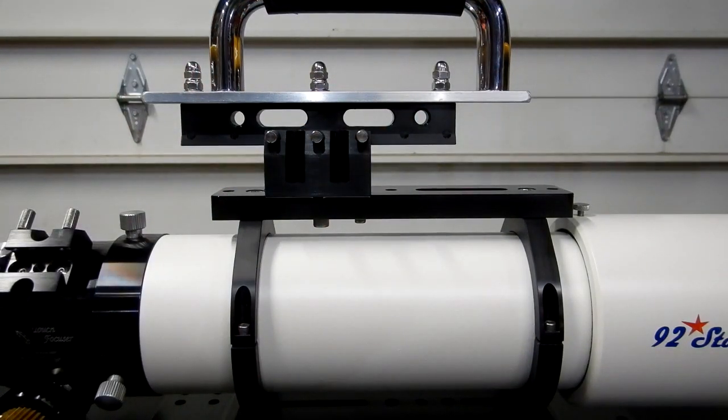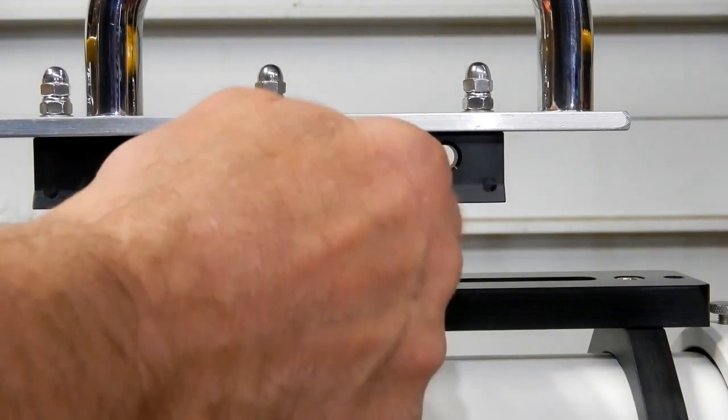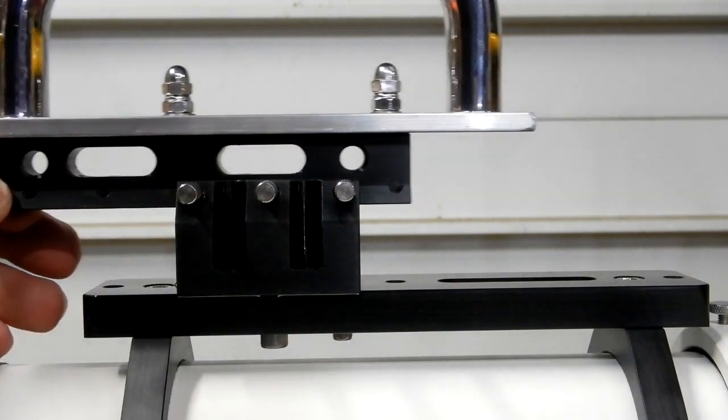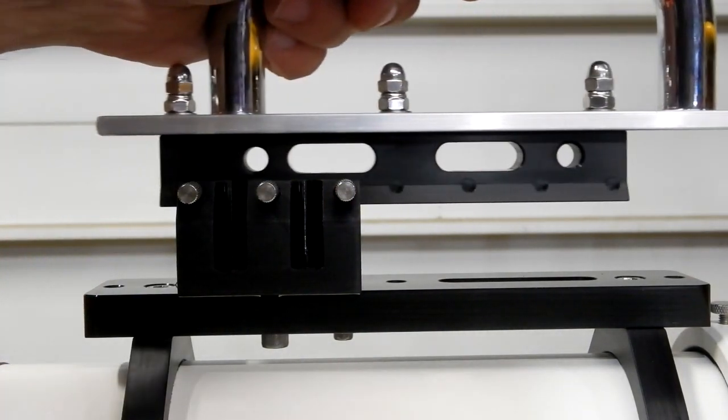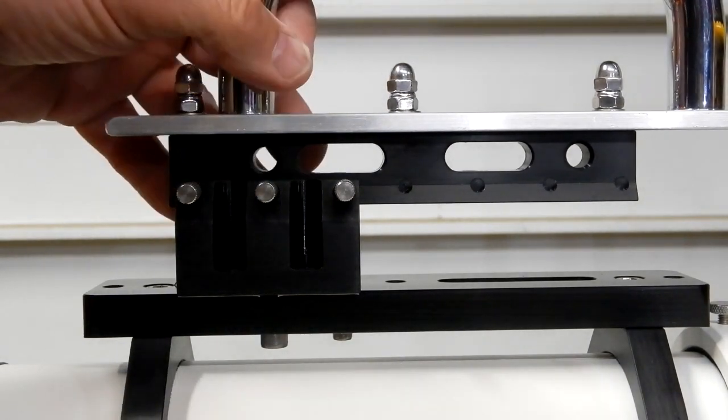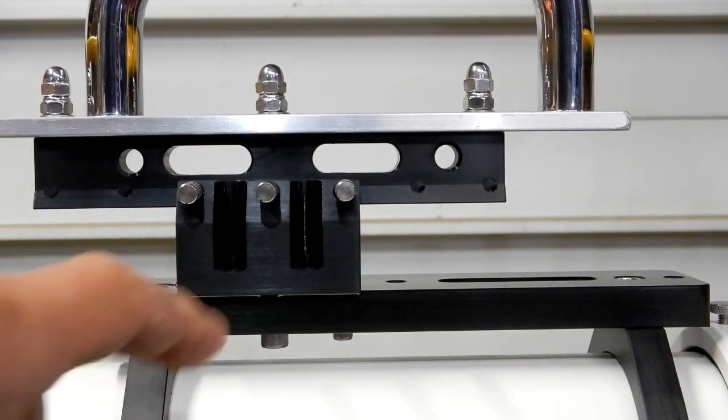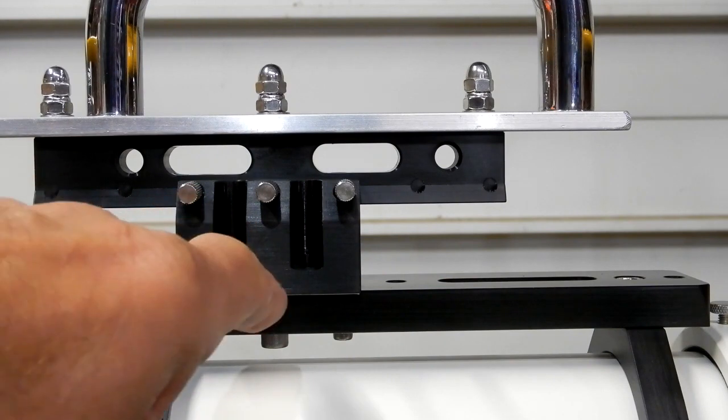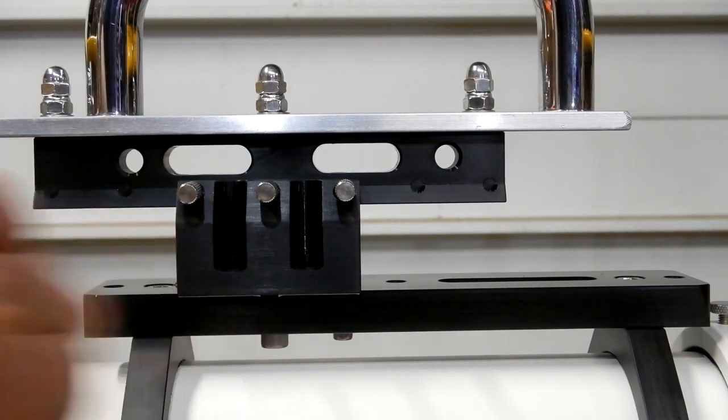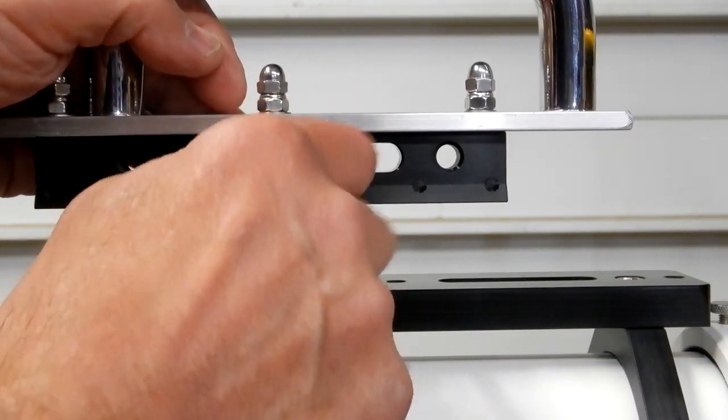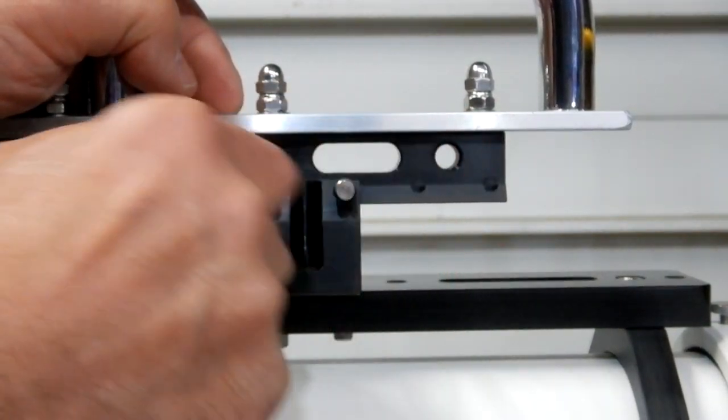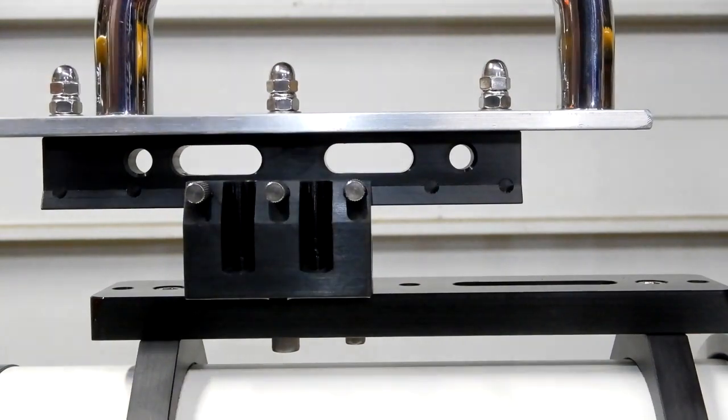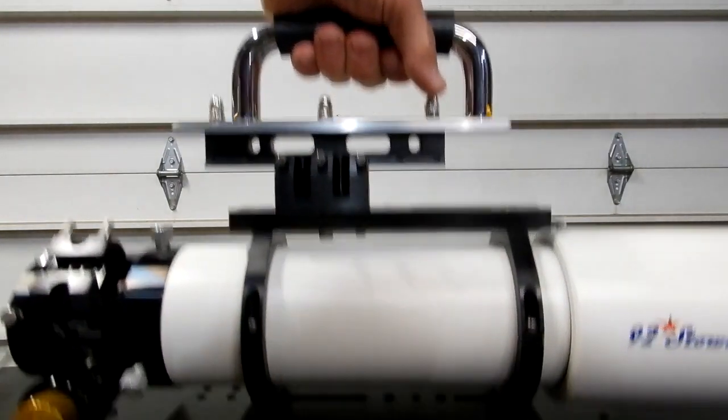The beauty of this is that since you have a multitude of positions you can slide this wherever you want to get your center of gravity where balance is the best. When I did this I knew that it was heavier on this end, the focuser end, so that's why I put this base where I did, towards the focuser end. The beauty of this is also the way this is, it's balanced, it's just perfectly balanced. You pick that up and it's just so nicely balanced.